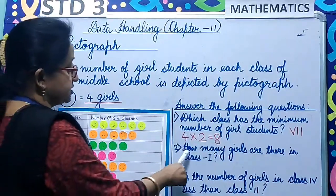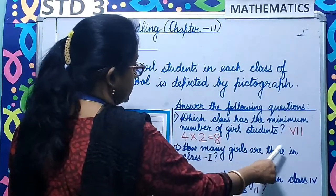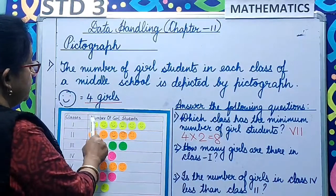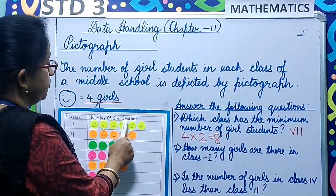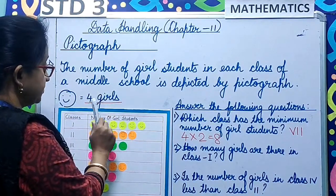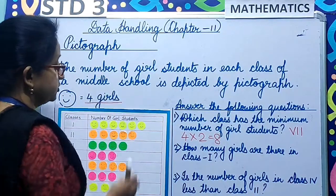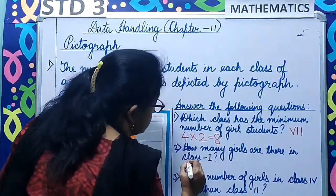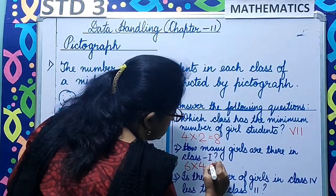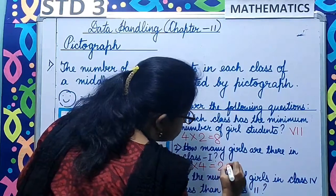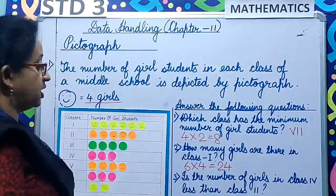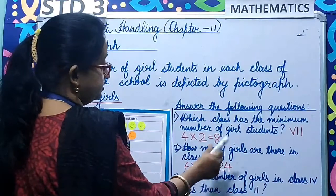Now our second question: how many girls are there in class 1? Class 1 has 6 smileys, and 1 smiley equals 4. So 6 into 4 gives you 24. So there are 24 girl students in class 1.